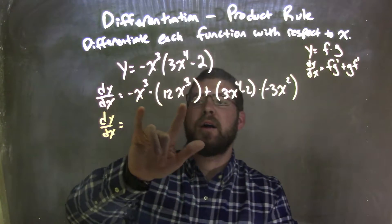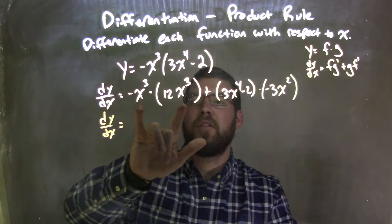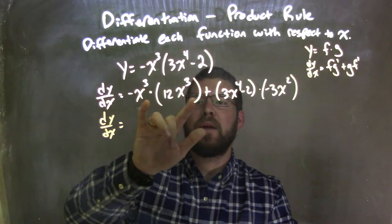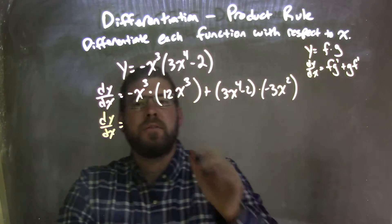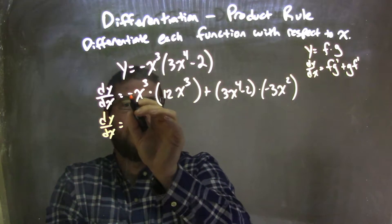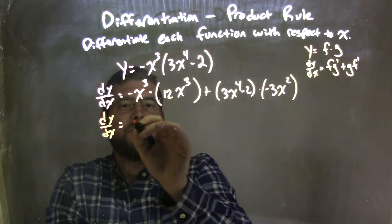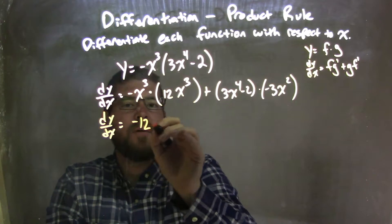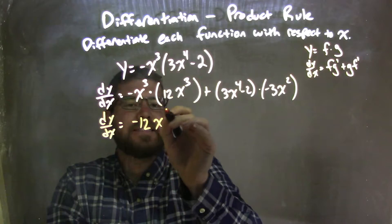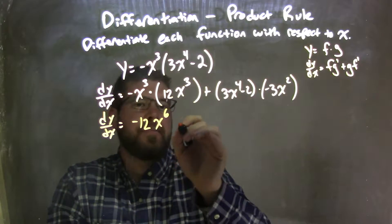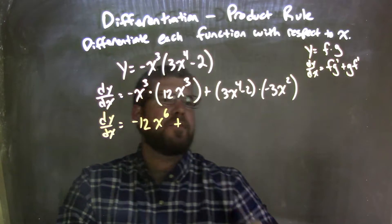Well, when we multiply x to the third, we add the exponents and multiply the coefficients up front. So we have negative 12x to the sixth, plus...